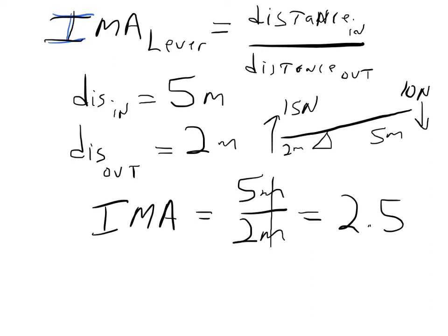So you get 2.5 times the mechanical advantage using a lever that's apparently 7 meters long. If you apply force at 5 meters from the fulcrum, you'll multiply that force 2.5 times if you use it about 2 meters from the fulcrum or the pivot point. That's it.